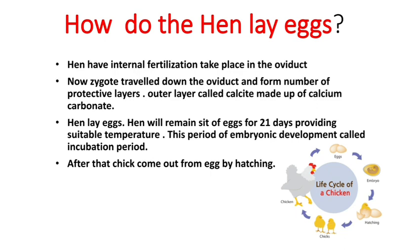The hen sits on the eggs without getting up or eating or drinking during this time. If you try to disturb the hen in this condition, she gets angry. Such a hen is called a broody hen. After 21 days, the embryo's development is complete, and the chick comes out from the egg. This process is called hatching. These are the various steps of egg formation and development in hens.